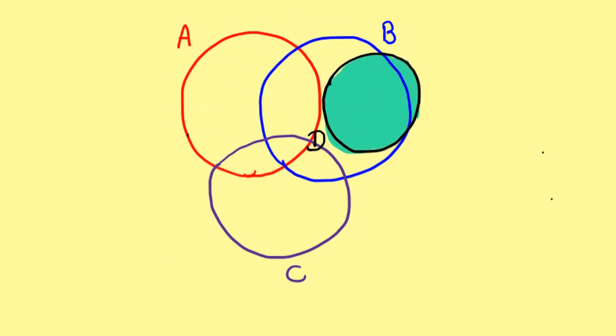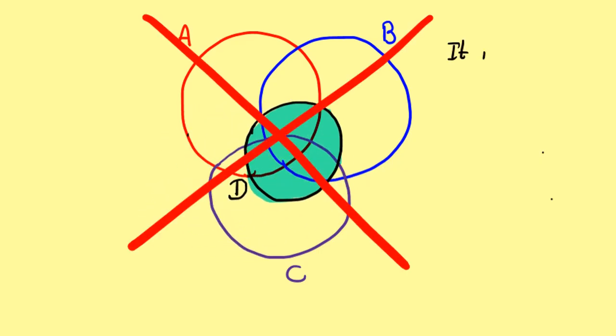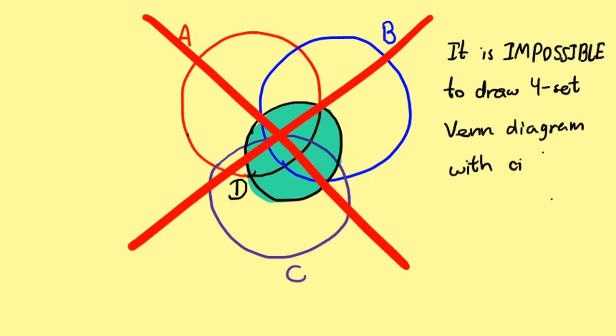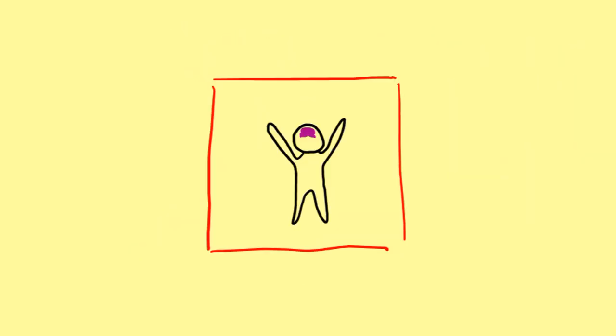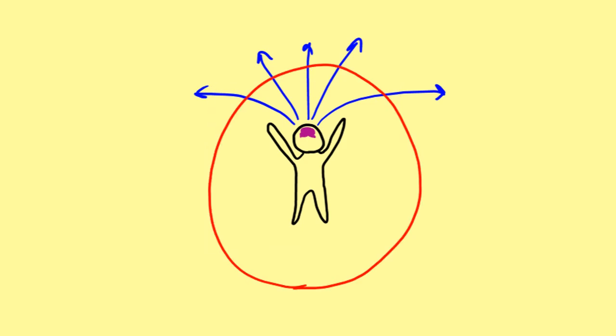After trying this for a while, you might sense that this task is impossible. And you will be right! In fact, it is actually impossible to draw a 4-set Venn diagram out of circles. Notice the wording here. It is impossible to draw with circles. If we think outside of the bounds, in this case outside of the circles, we can easily solve this problem.